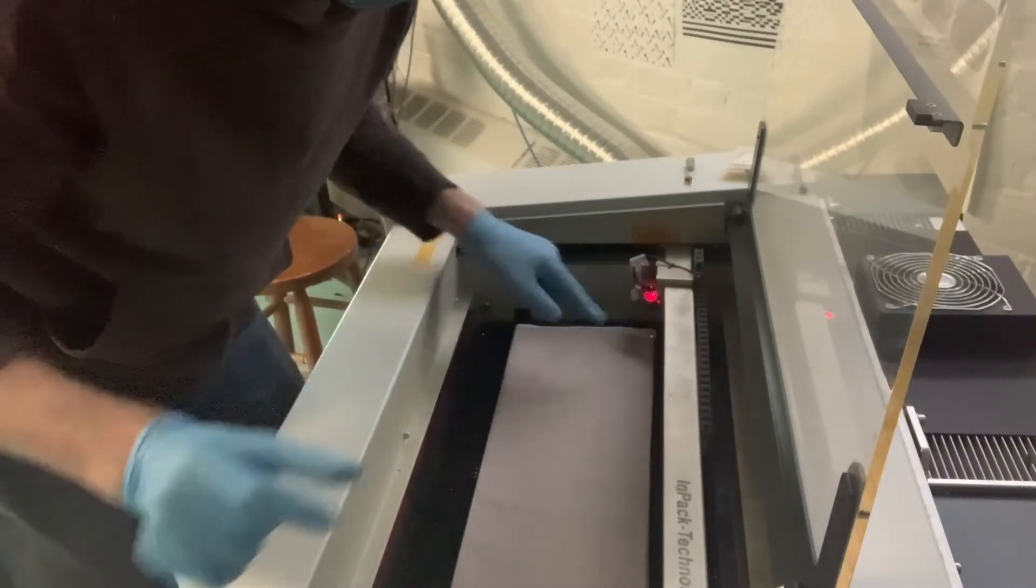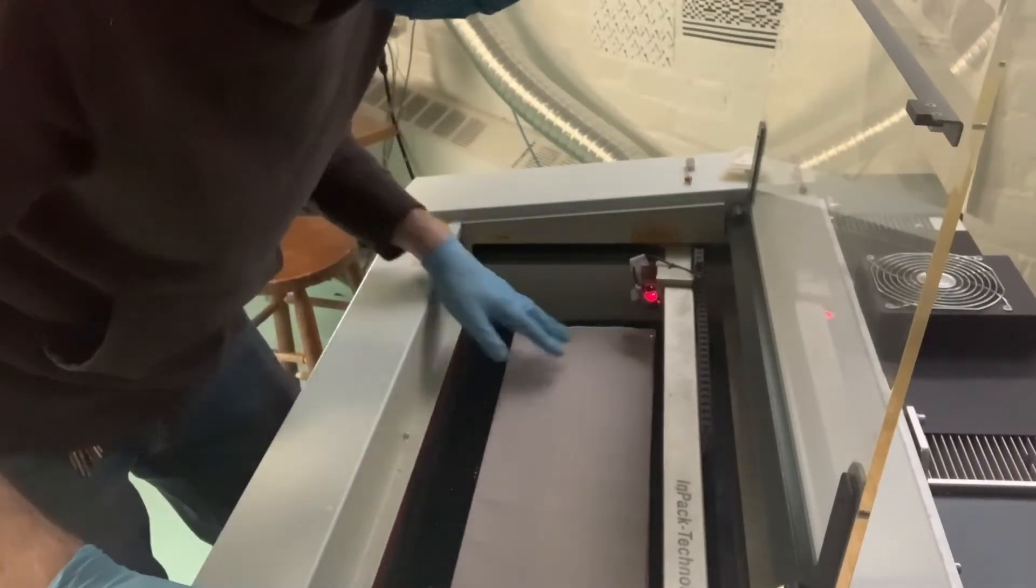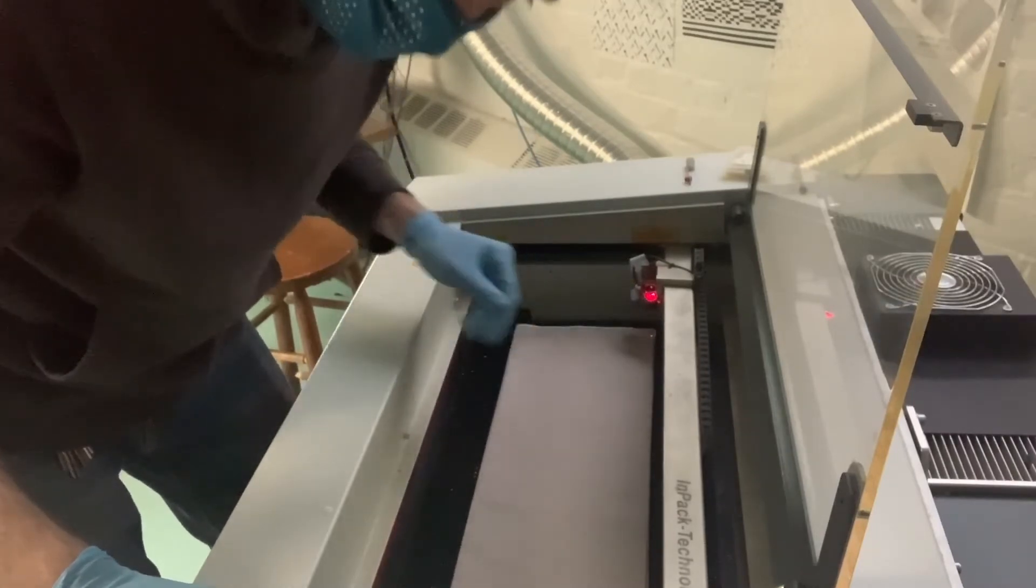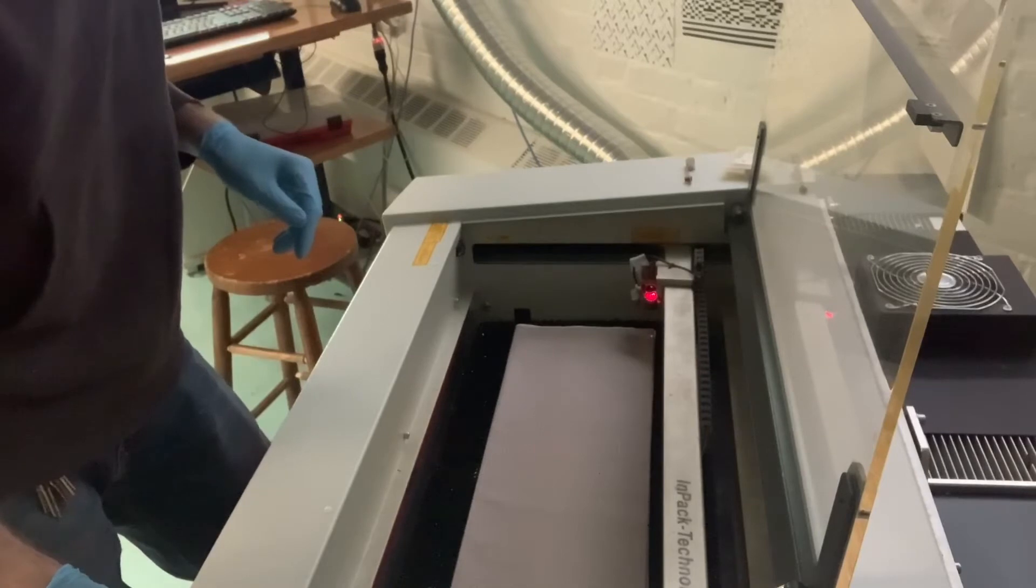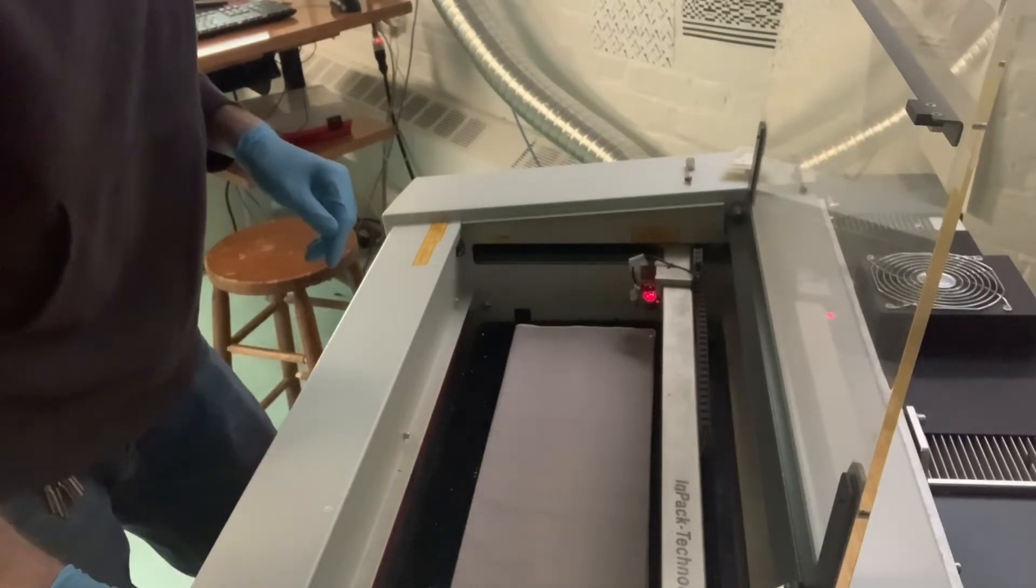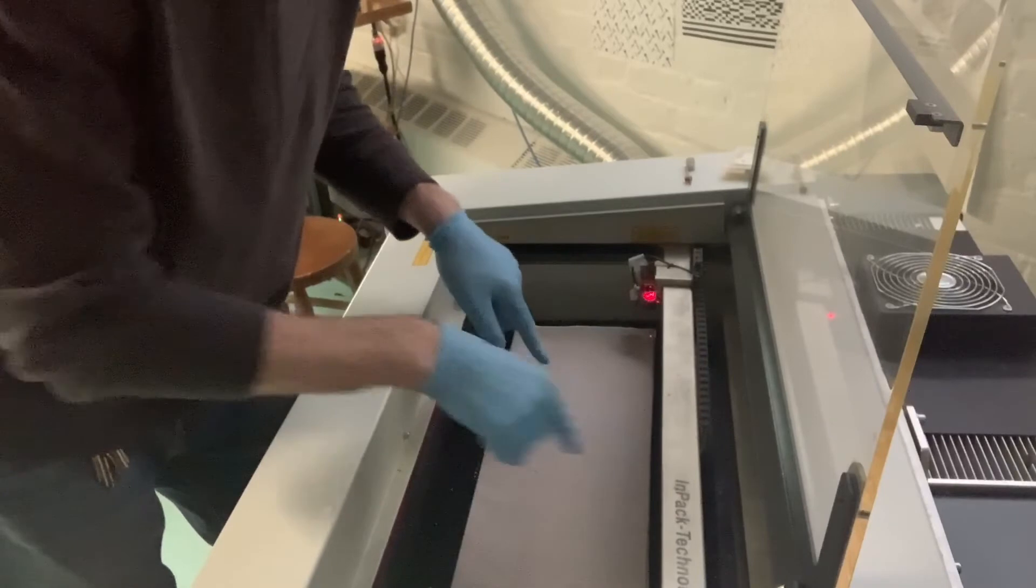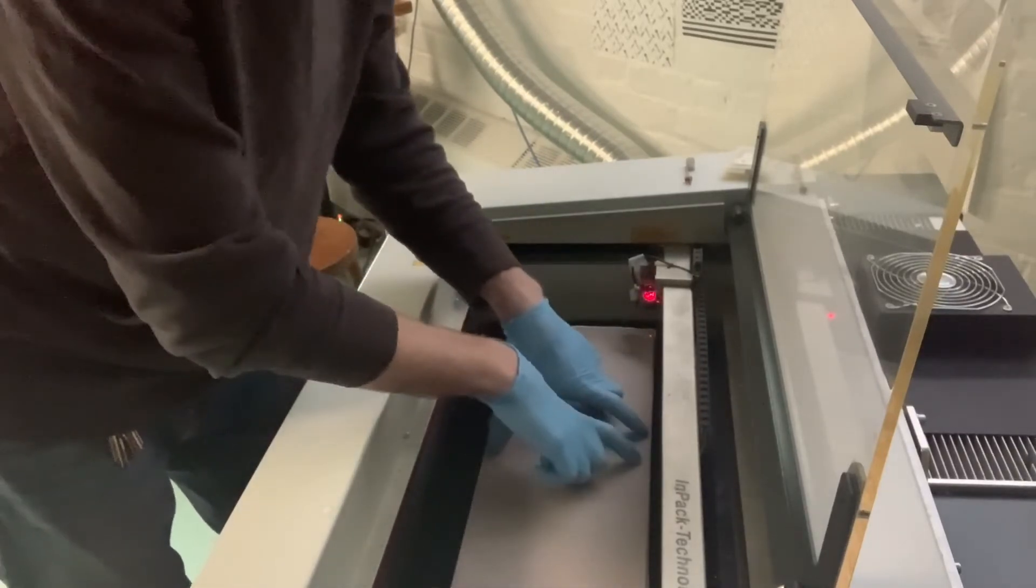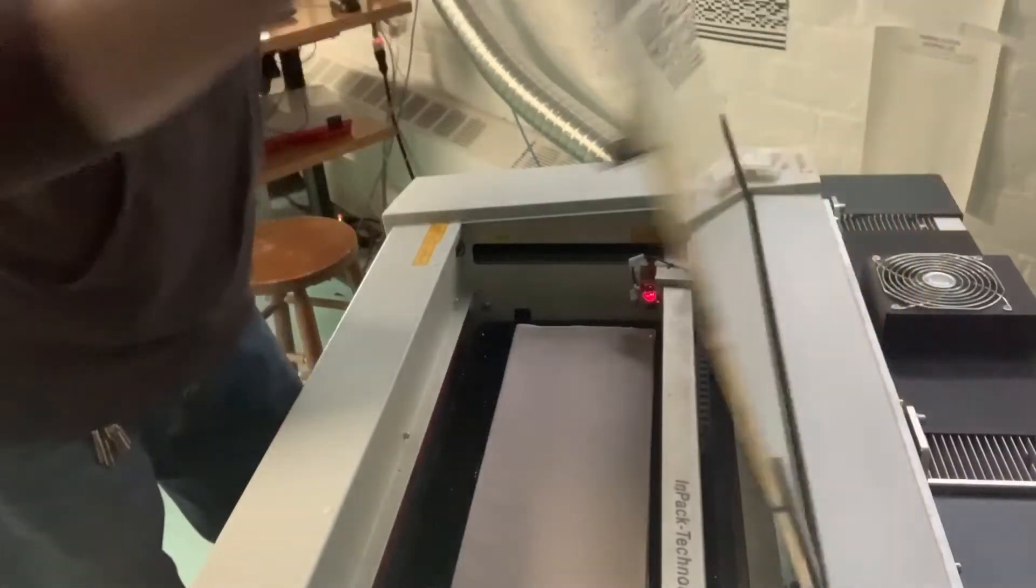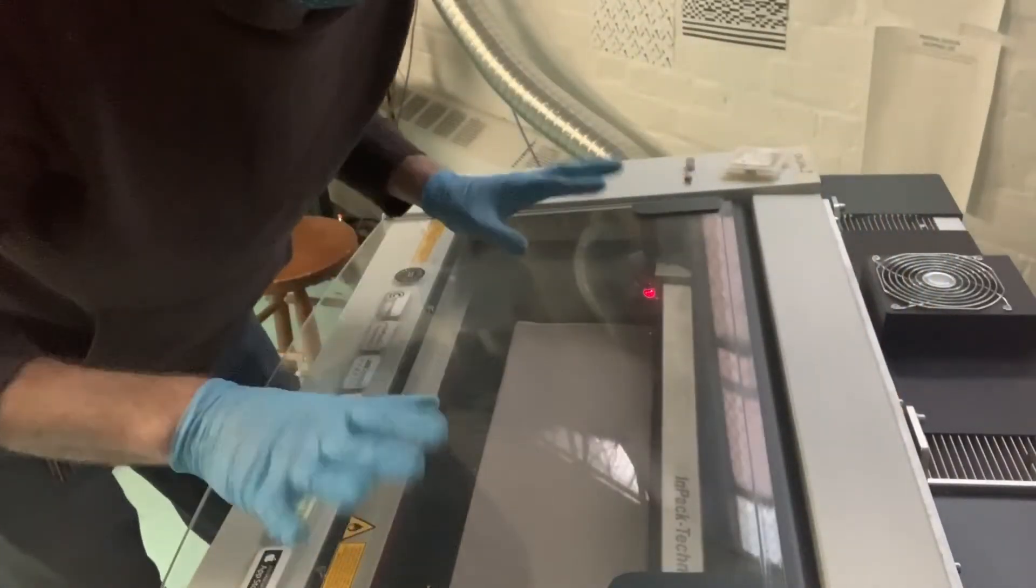We're going to line it up maybe about half an inch in from the edge of where our fabric is. Give myself a little room on the bottom and the top so I don't have to get it exactly on that edge, but not so much that we're wasting fabric.